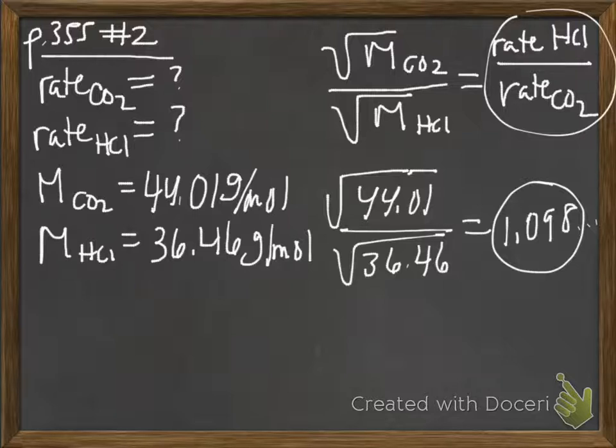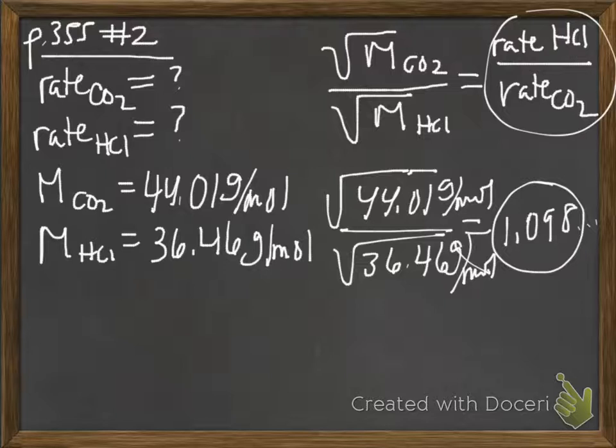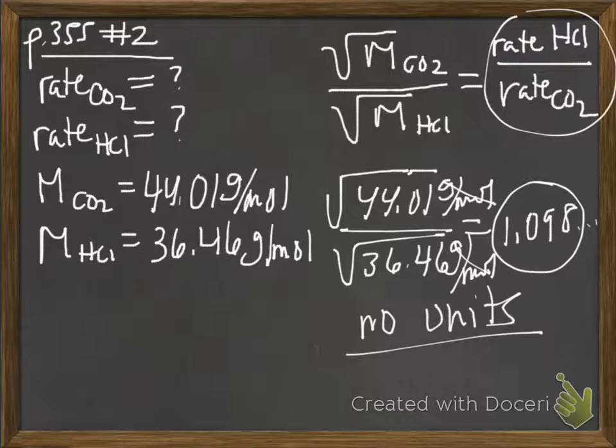What are the units here? This is a ratio. Grams per mole. Grams per mole. What are the units here? No units. They canceled. Ratios don't have units.